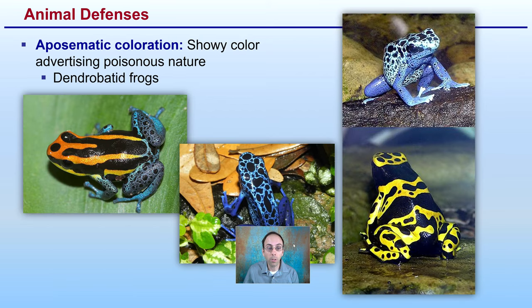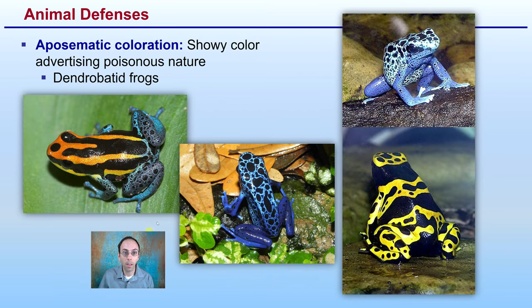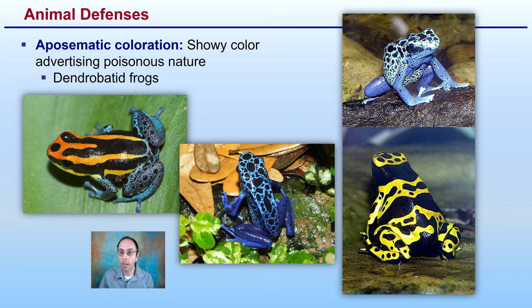Another animal defense goes completely against blending in — having a showy color, called aposematic coloration. This is advertising a poisonous nature, as we see with these frogs. These are very poisonous frogs that, instead of blending in, go the opposite direction. They want to be loud and proud, showing off and signaling: I'm poisonous, you can easily see me, stay away from me.